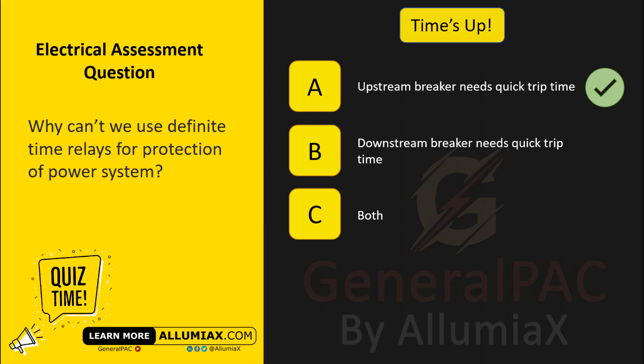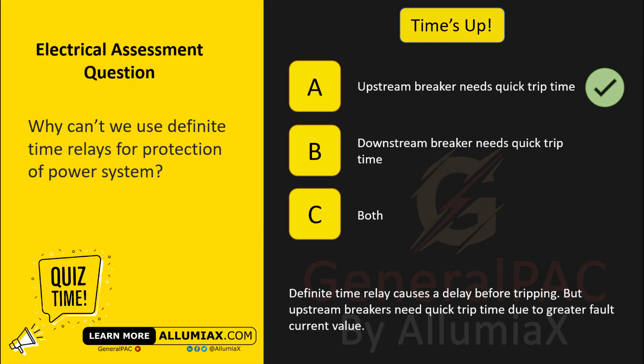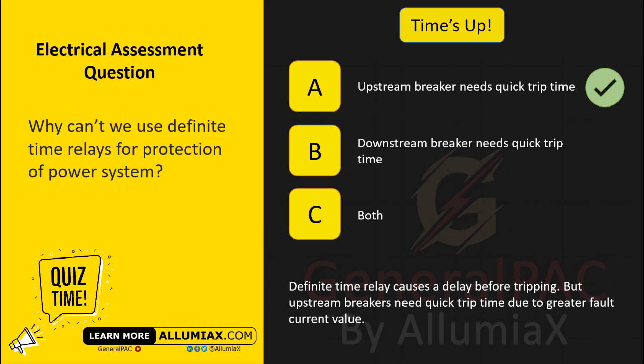The answer is A. Definite time relay causes a delay before tripping, but upstream breakers need quick trip time due to greater fault current value.